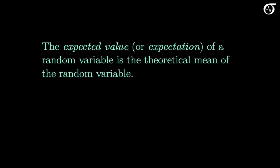The expected value, or expectation, of a random variable is the theoretical mean of the random variable. It is not based on sample data — it is the theoretical mean of a distribution. The notation for the expected value of a random variable X is E[X]. It's simply the mean of the random variable, or equivalently the mean of the random variable's probability distribution. We also represent the mean with the Greek letter mu.